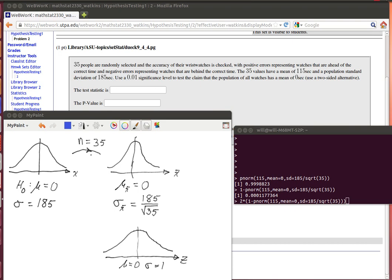The central limit theorem works very directly for us. We're going to look at 35 watches, and after doing that we discover that the mean of those 35, on average they're running fast by 115 seconds.